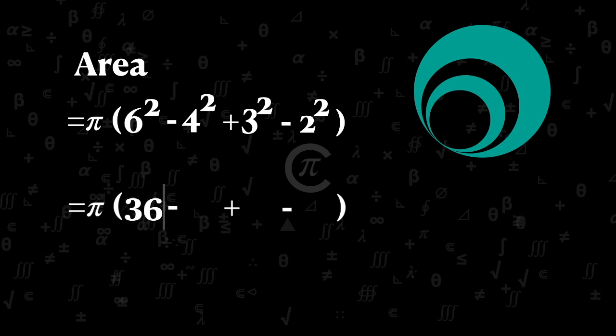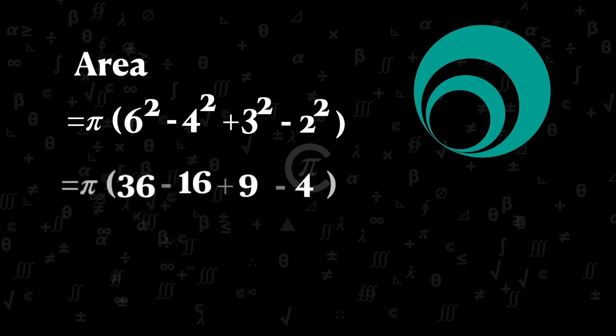6 square is equals to 36, 4 square is equals to 16, 3 square is equals to 9, 2 square is equals to 4. After calculating 36 minus 16 plus 9 minus 4 which equals 25.